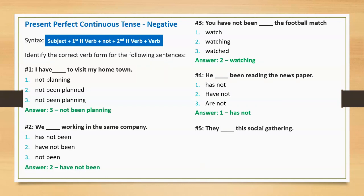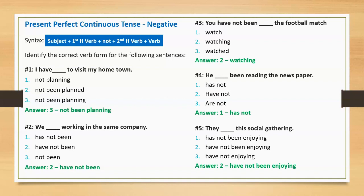Sentence five: 'They blank this social gathering.' Option one: has not been enjoying. Option two: have not been enjoying. Option three: have not enjoying. Correct answer: have not been enjoying. Full sentence: 'They have not been enjoying this social gathering.'